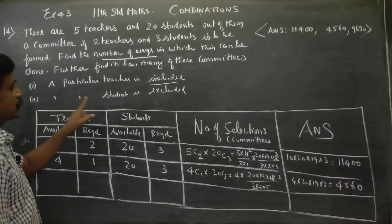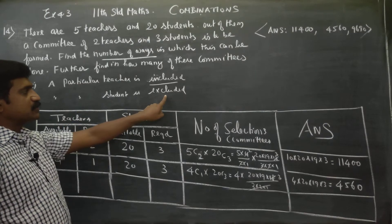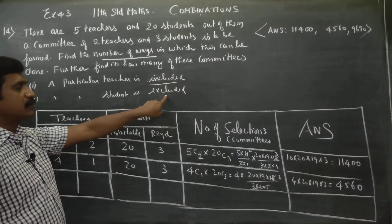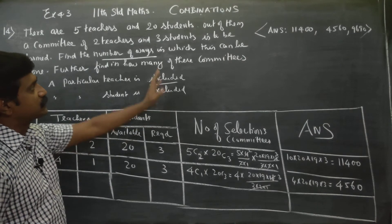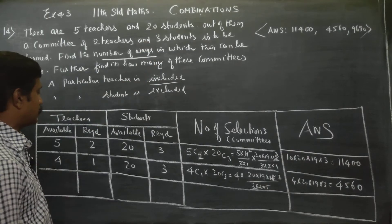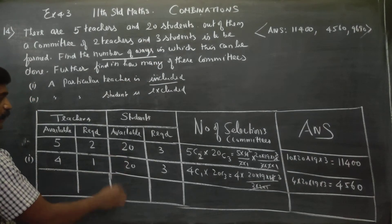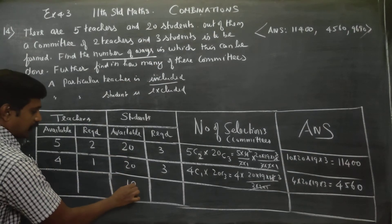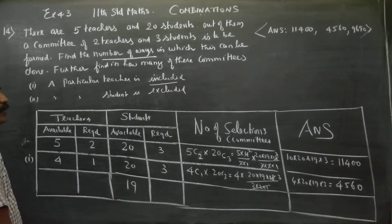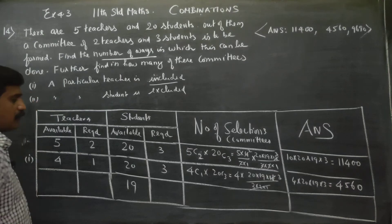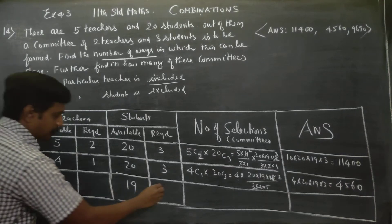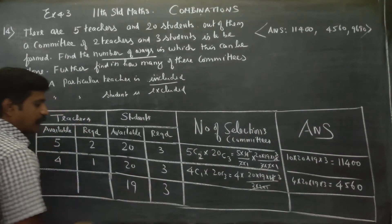The last case: a particular student is excluded — one student is not included. So the available students become 19. You still have to select 3 students from the remaining 19.